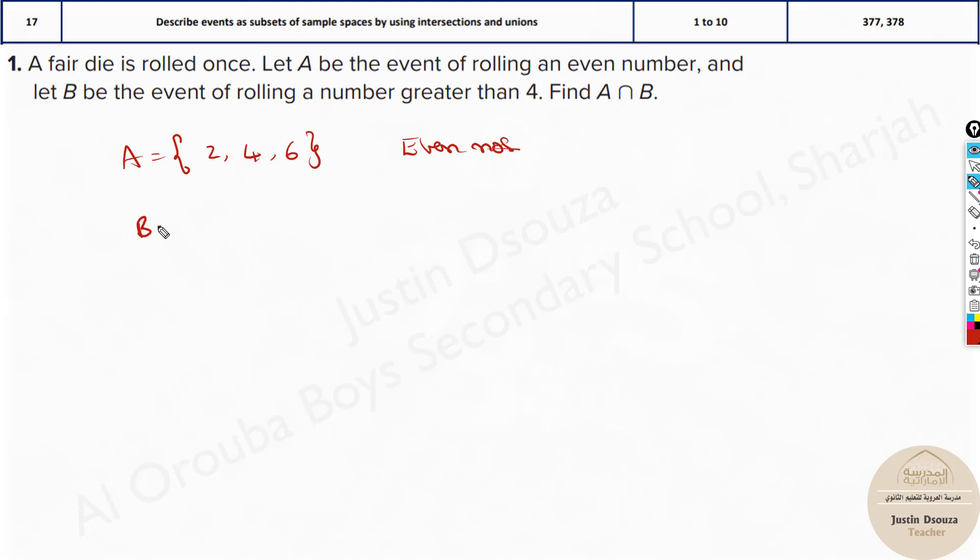What about event B? It is rolling number greater than 4. Greater than 4 means is the 4 included? So greater than 4 means it is 5 and 6. The 4 number is not included. If it was greater than or equal to 4 means 4, 5, 6. But here they have just told greater than 4. Now we need to write A intersection B. That is the number, the terms which are common in both. That is only 6.